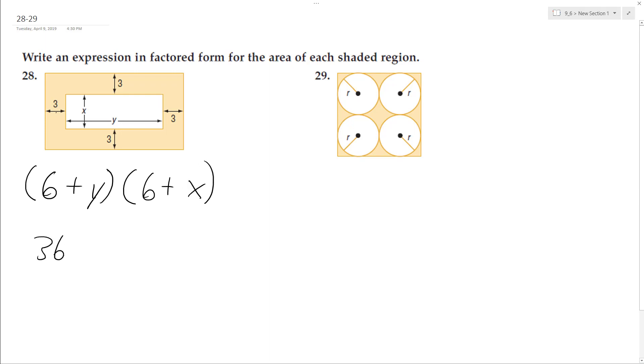So we're going to get 36 plus 6x plus 6y plus xy. And then the middle term is just minus xy, the area of the middle term. So this cancels out the plus xy minus xy, so we end up with 6x plus 6y plus 36.